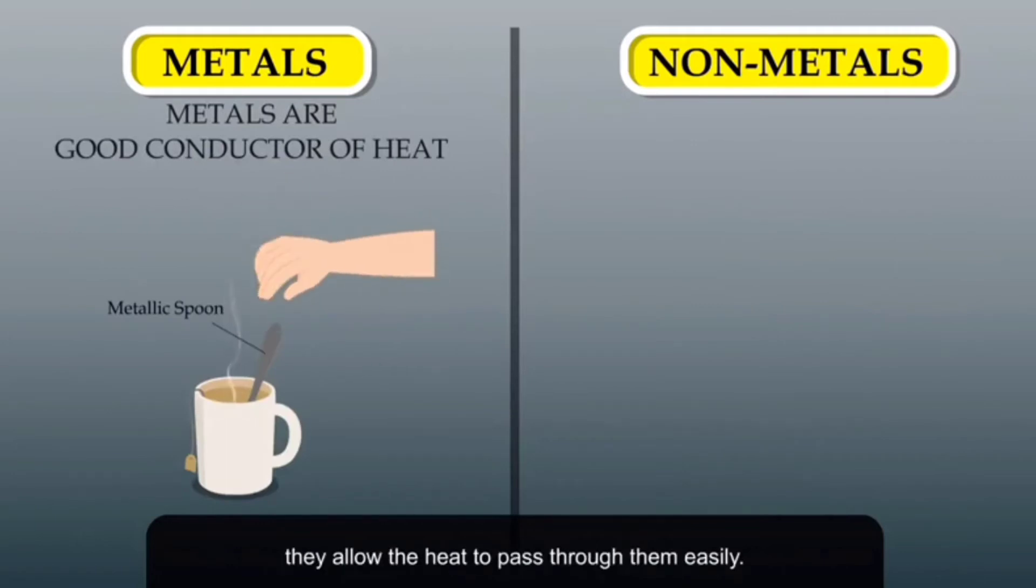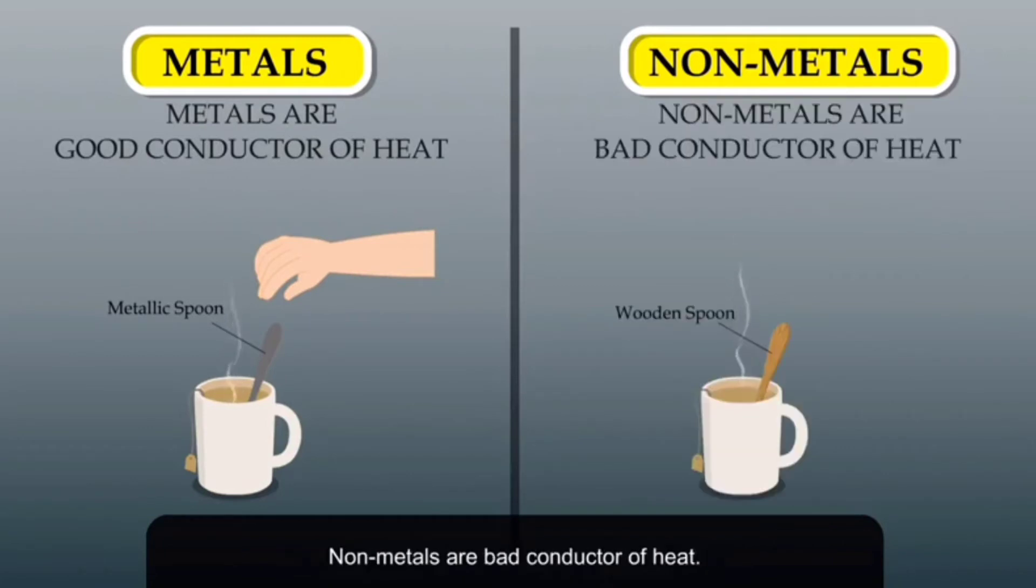Metals are good conductors of heat. They allow heat to pass through them easily. Non-metals are bad conductors of heat, meaning they do not allow heat to pass through them.